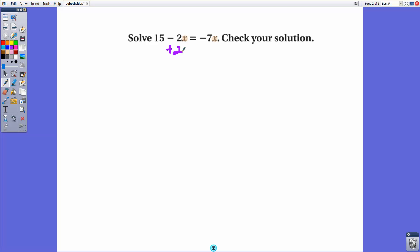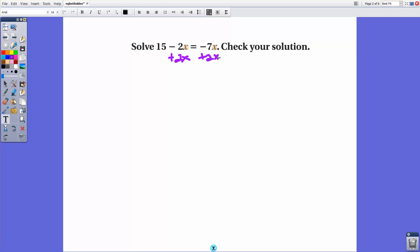And by doing that, by adding 2x to both sides, that's going to get our x term on one side and a value on the other side. So when we add 2x, this left side becomes just 15. And that will equal negative 7 plus 2 is negative 5. So it's going to be 15 equals negative 5x.